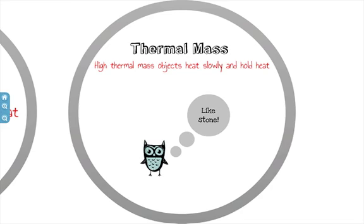Objects of high thermal mass heat up more slowly and hold heat for longer periods of time. They also have a low thermal resistance, meaning that when heat is applied to one side of the material, it will move very quickly to the cooler side and heat it until an even temperature is reached. Materials that have a high thermal mass are brick, stone, concrete, earth, metals, and plaster.